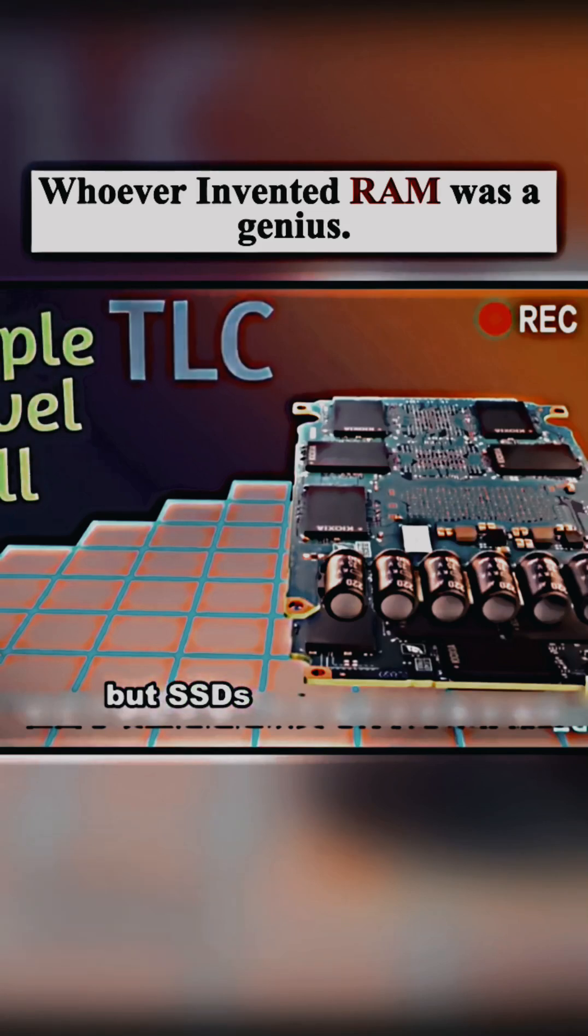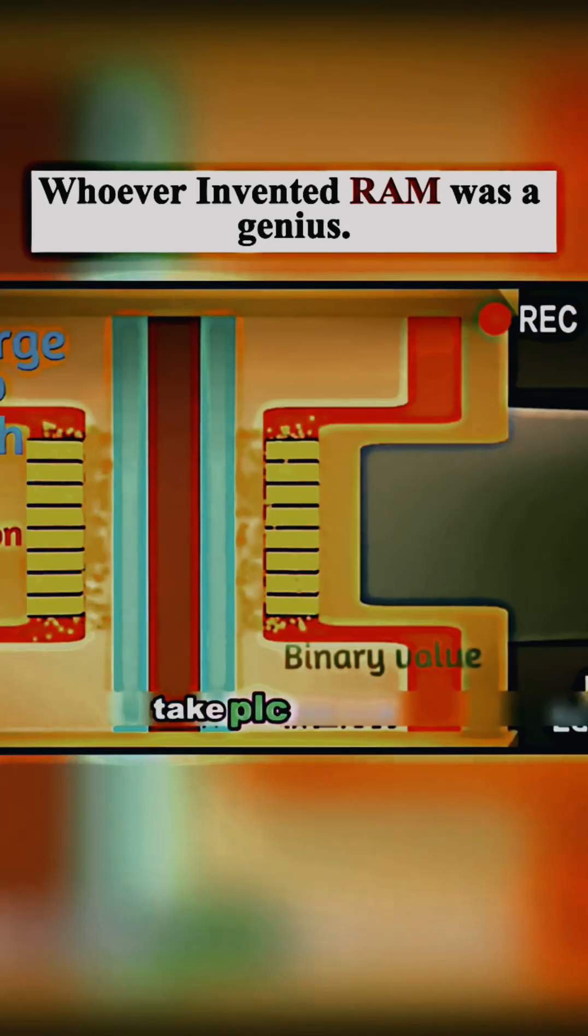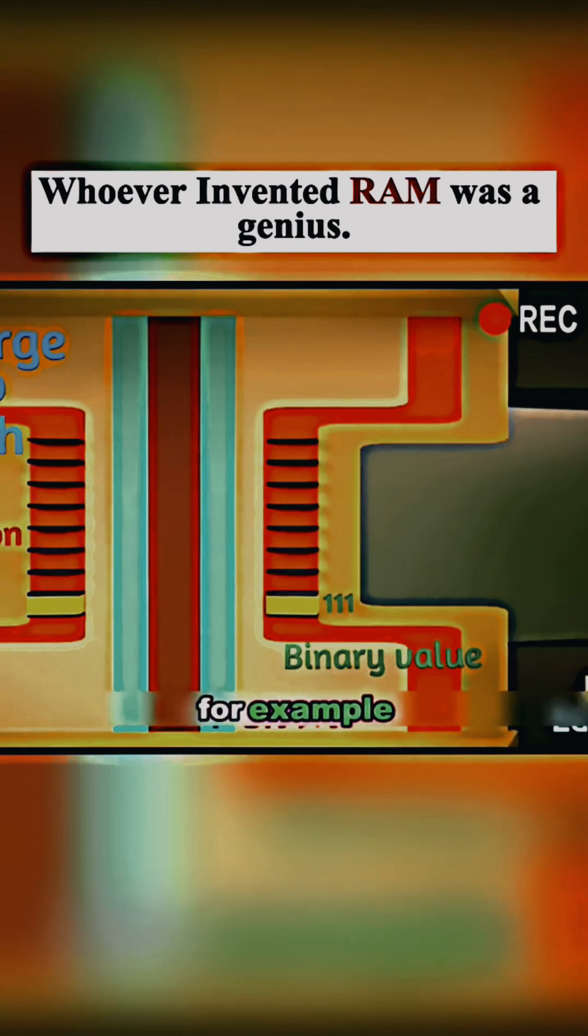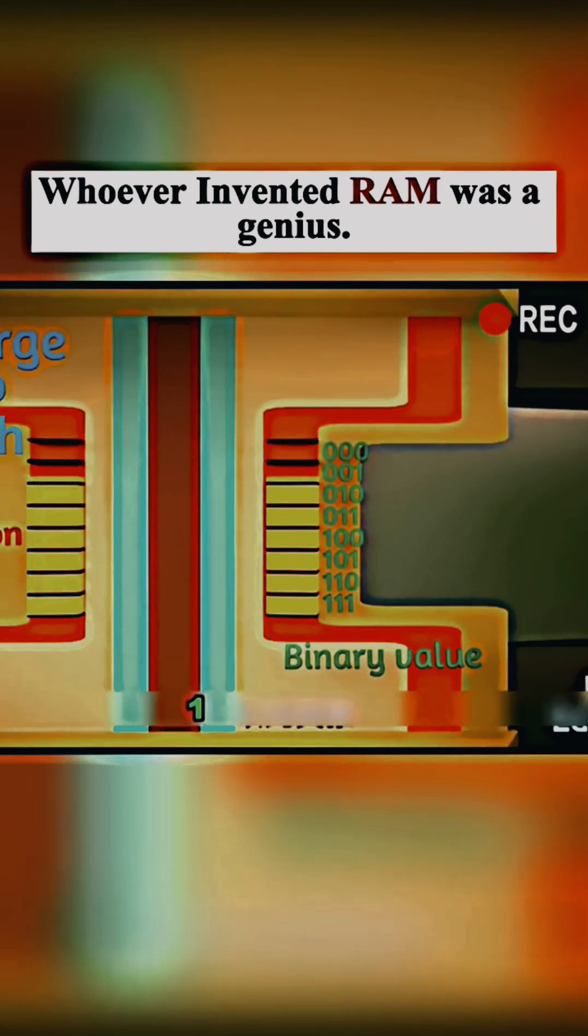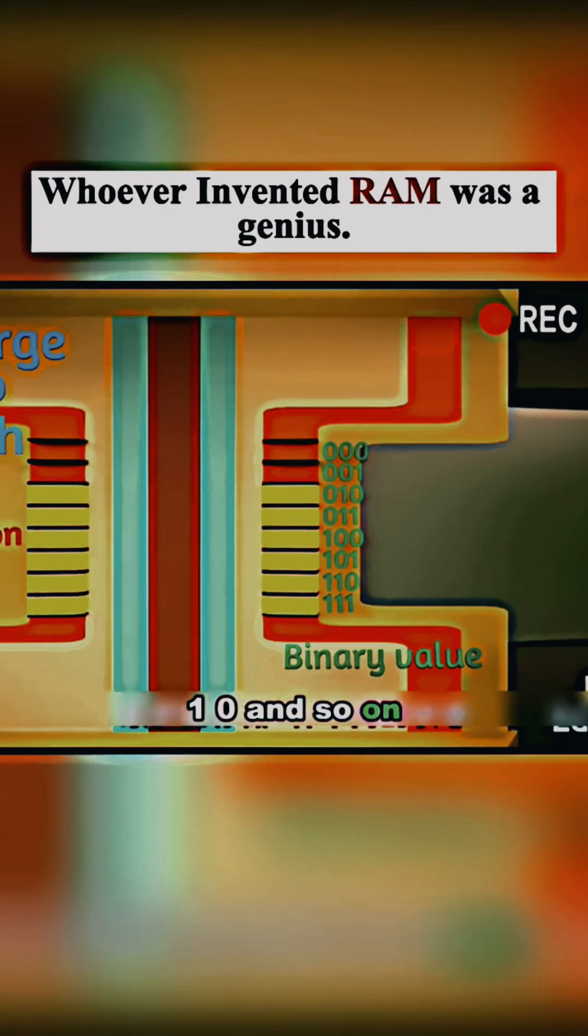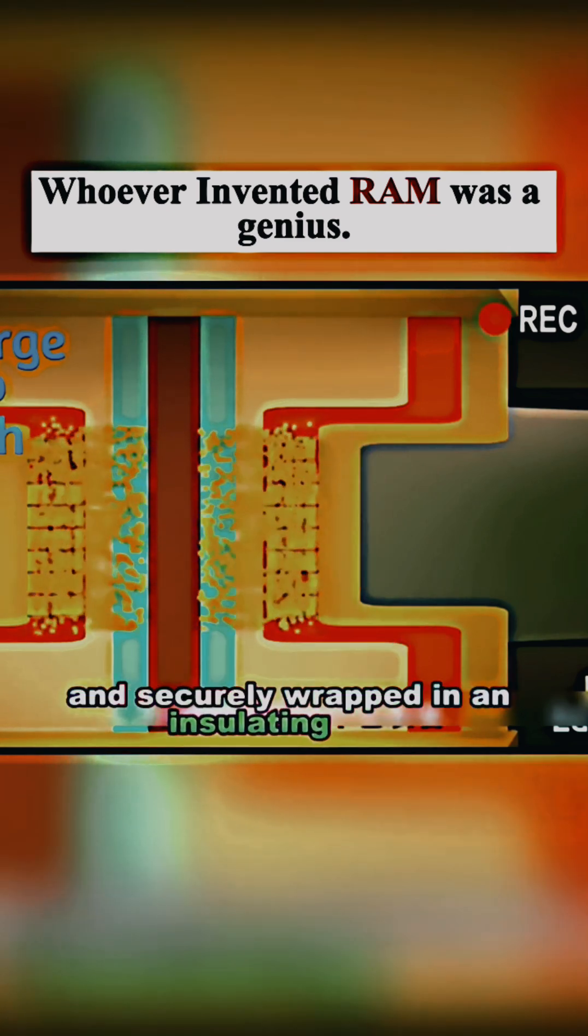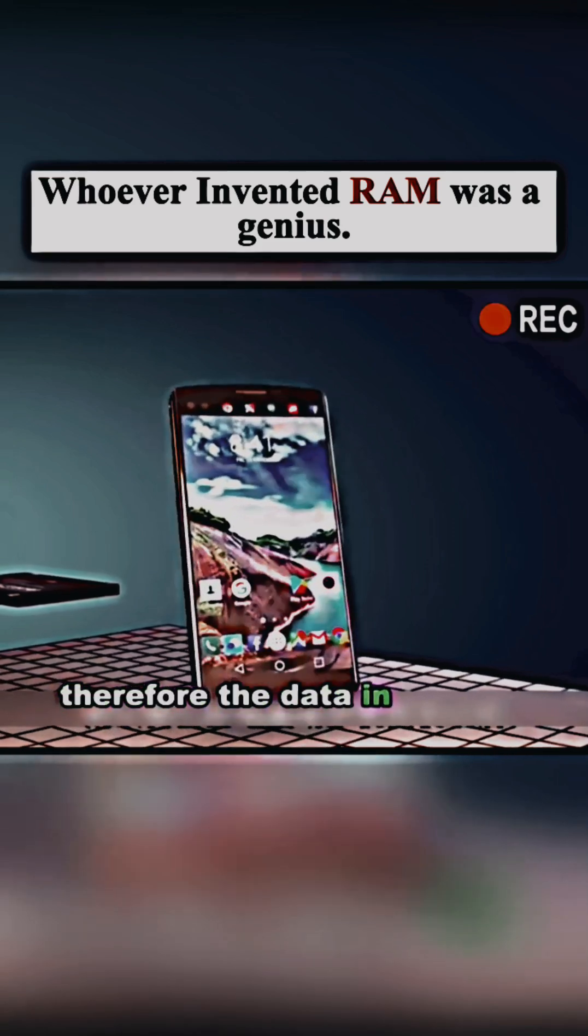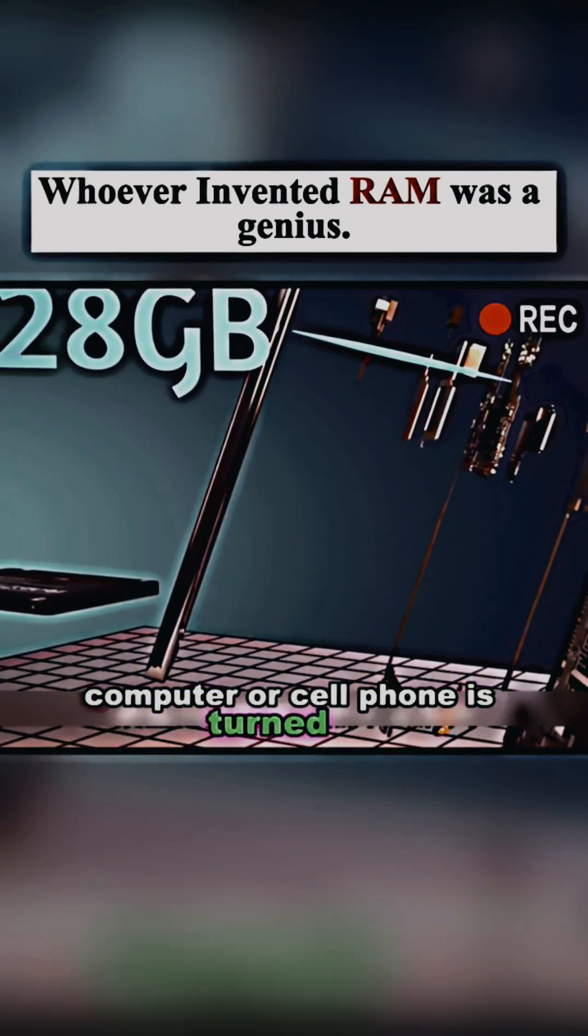But SSDs store data by changing the state of charge. Take PLC Particles, for example. One charge means 1-1-1, two charges means 1-1-0, and so on. Up to 8 different states can be stored and securely wrapped in an insulating layer. Therefore, the data in the SSD will not be lost when our computer or cell phone is turned off.